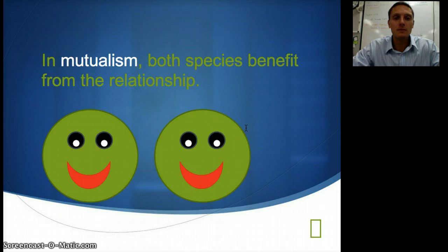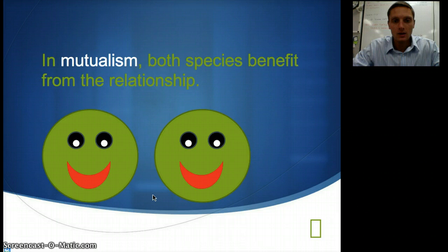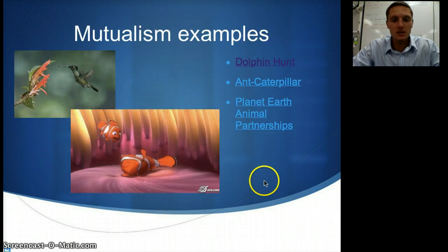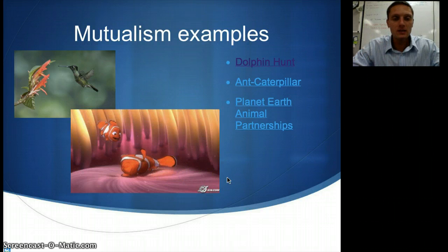In mutualism, both species benefit from the relationship. We have two species that are both happy and both getting something from the interaction. For a more specific example, if you've seen Finding Nemo, or heard of a clownfish and a sea anemone, this is an example of mutualism.